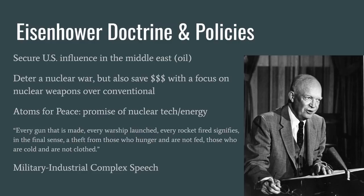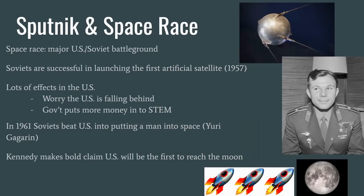A central theme of the Cold War was the space race between the United States and Soviet Union. The Soviets successfully launched the first artificial satellite in 1957, called Sputnik, which caused the U.S. to worry it was falling behind and led the government to invest heavily in STEM education. In 1961, the Soviets again beat the U.S. as they were first to put a man into space — Yuri Gagarin, seen there on the right. These developments led President Kennedy to boldly claim the United States would put a man on the moon before the end of the 1960s, and to this day they are the only nation to have done so.